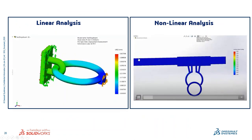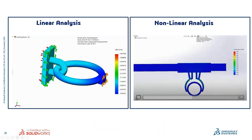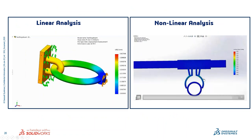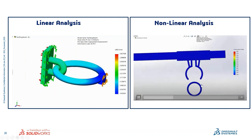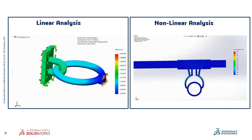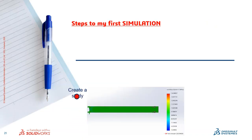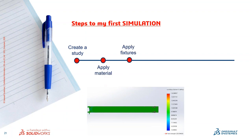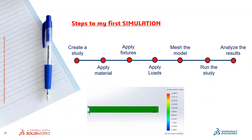Here's an example of linear analysis versus non-linear analysis. In non-linear analysis, you can see how the object tries to take shape as the loads change while it keeps moving — it is based on a time interval. How do I start my first simulation? Number one: create a study and define the simulation study type. Then apply materials, apply fixtures (boundary conditions), apply loads, mesh the model, run the study, and analyze the results. These are the steps required to create your first simulation.